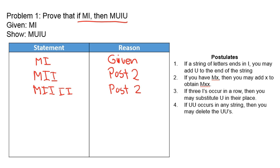Now let's see what applies. We know MIIII is true. The string ends in I, so we could add a U to the end by postulate one. Postulate two says we could double what comes after the M. Postulate three could also apply since we have three I's in a row. Postulate four still does not apply. I'm going to apply postulate one — to MIIII I'll add a U to get MIIIIU by postulate one.